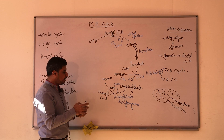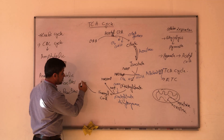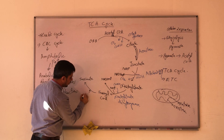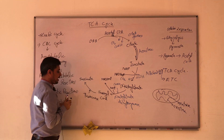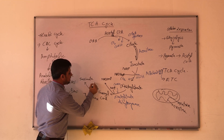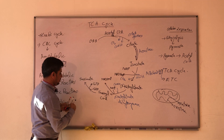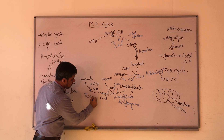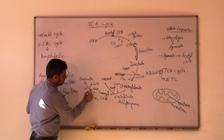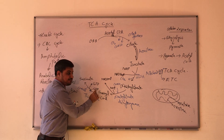From here, the CoA portion is removed and rearrangements occur, converting succinyl-CoA into succinate. The enzyme involved is thiokinase, which cleaves the CoA portion from succinyl-CoA, releasing CoA-SH. Here there will be the formation of GTP from GDP — this is substrate-level phosphorylation.